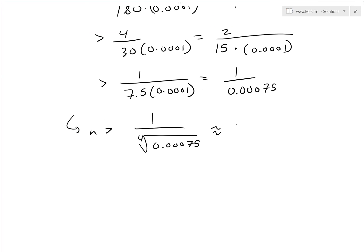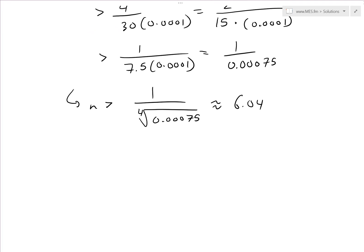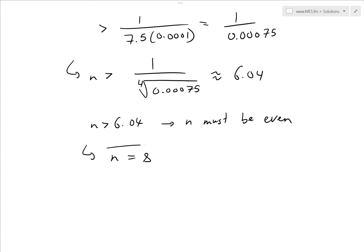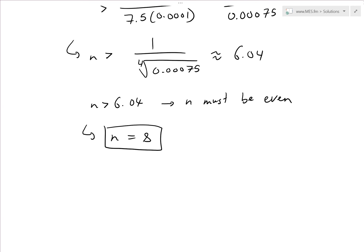So n must be greater than approximately 6.04. Additionally, for Simpson's rule, n must be even. The smallest even integer greater than 6.04 is 8, so we choose n = 8 sub-intervals to guarantee accuracy within 0.0001 using Simpson's rule.